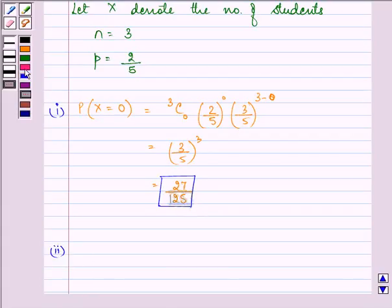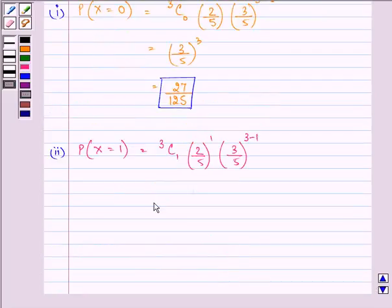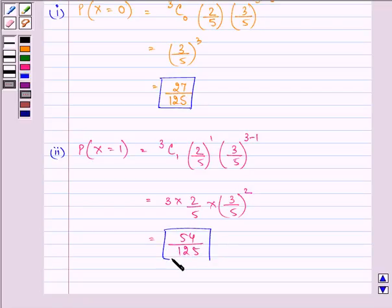For the second part, we need to find that only one will graduate, meaning x equals 1. We have 3C1 times (2/5)^1 times (3/5)^(3-1). That equals 3 times (2/5) times (3/5)^2, which comes out to 54/125. This is the answer to the second part.